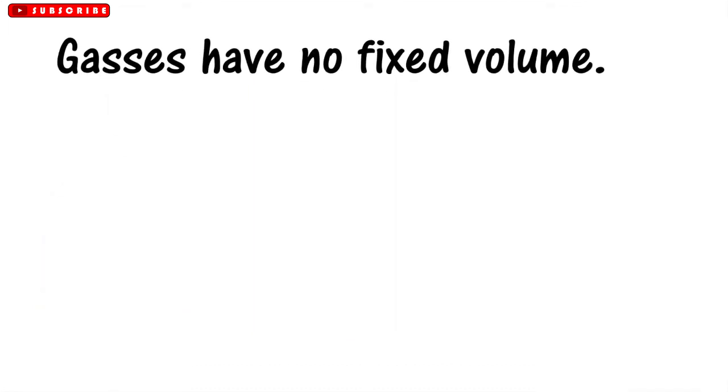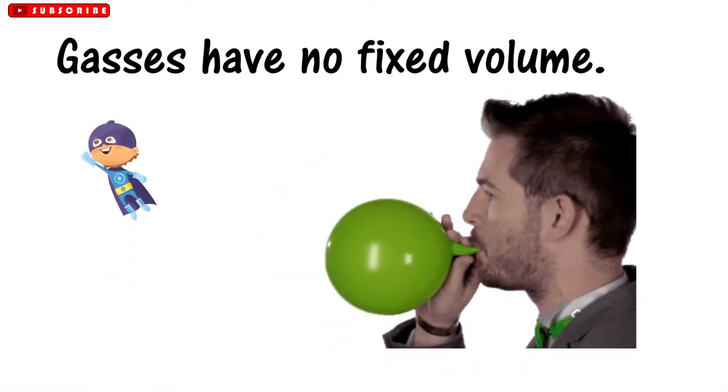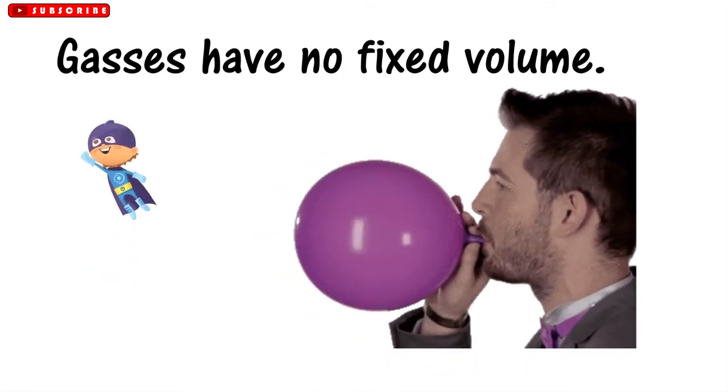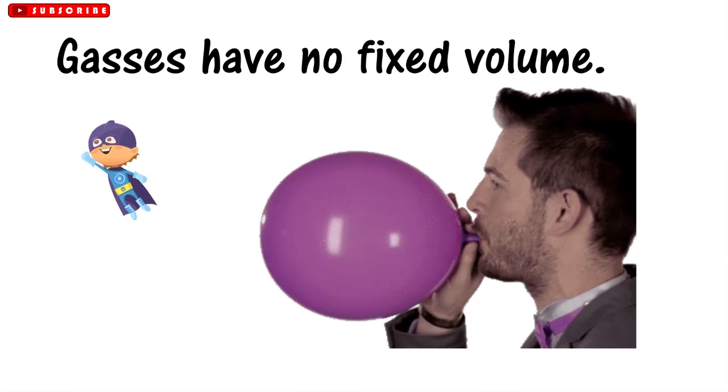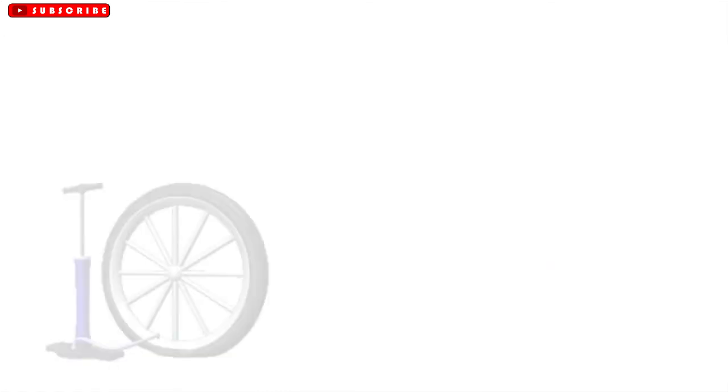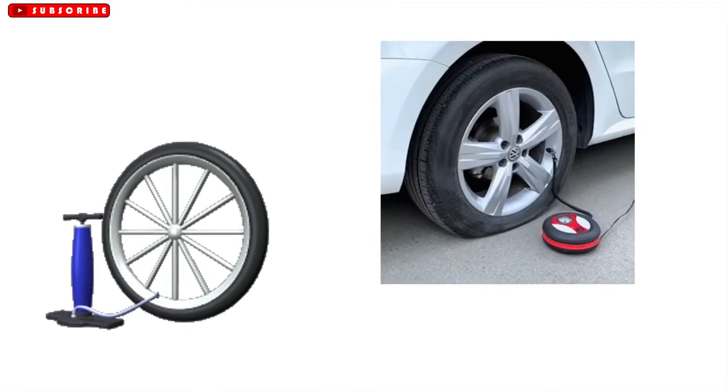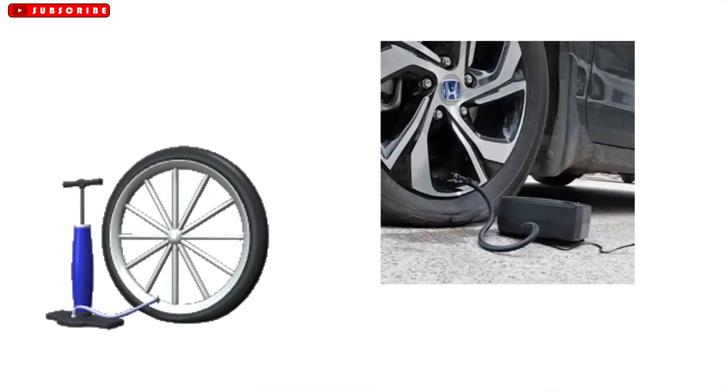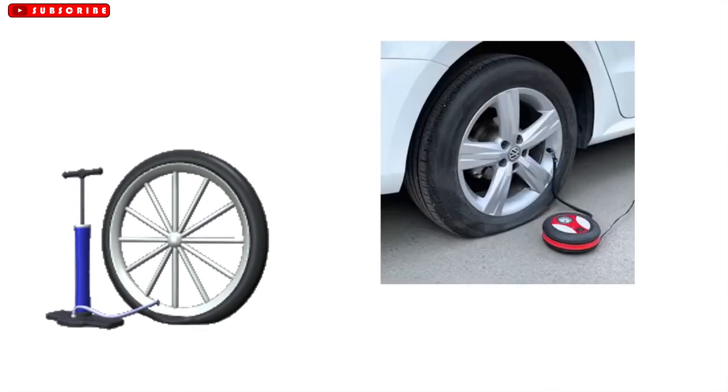Gases have no fixed volume. They spread out easily to fill the containers. When we pump a tire, the air from the pump flows into the tire through the pipe.